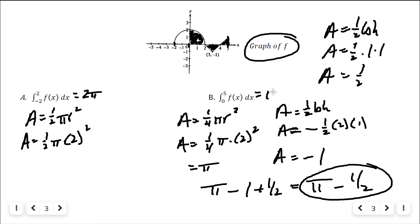The overall area is pi minus one plus one half, which equals pi minus one half. That is the integral from zero to five of f of x dx. The analogy to remember: derivative is to tangent line as definite integral is to area under the curve — derivative means slope of tangent line.